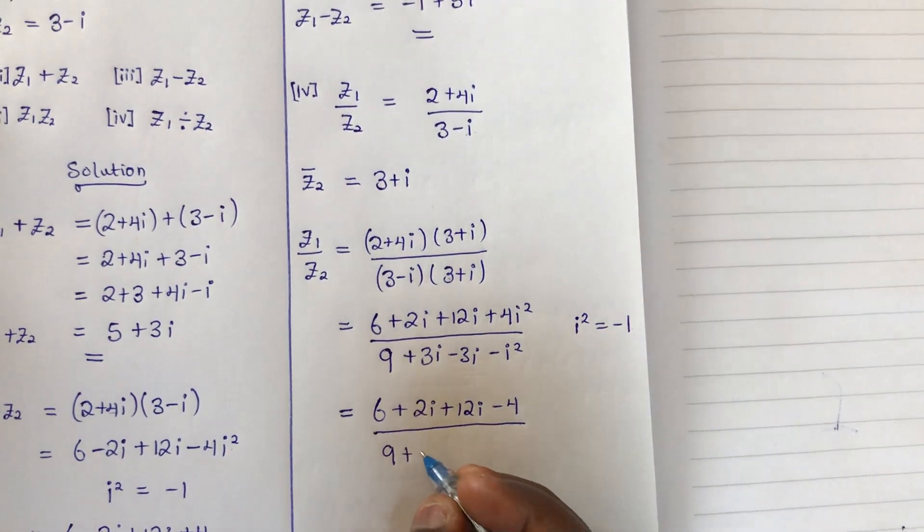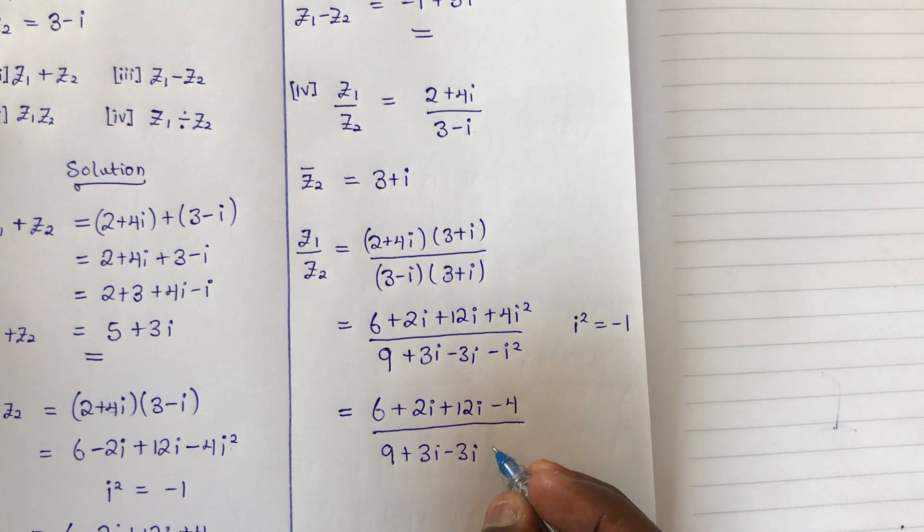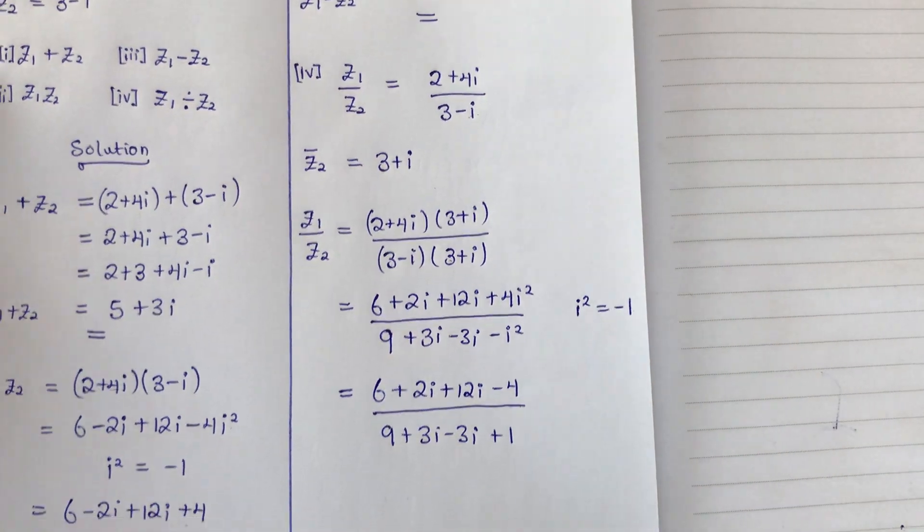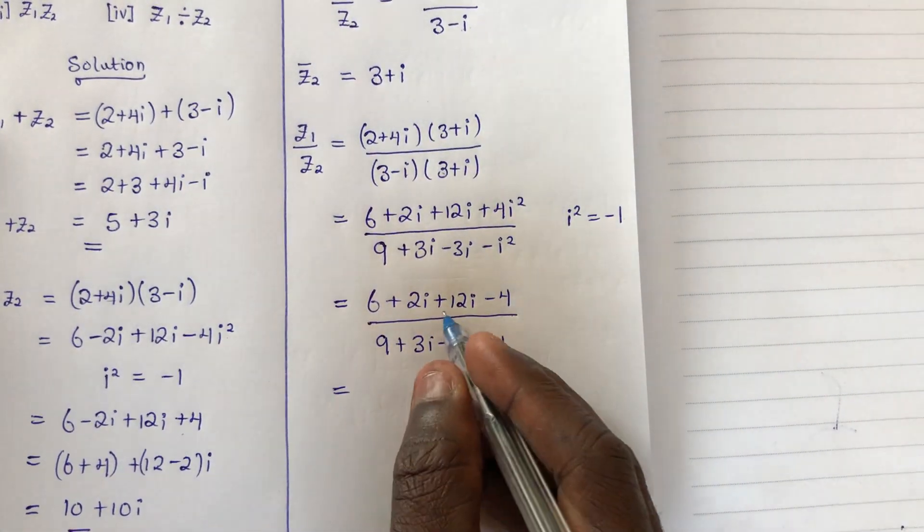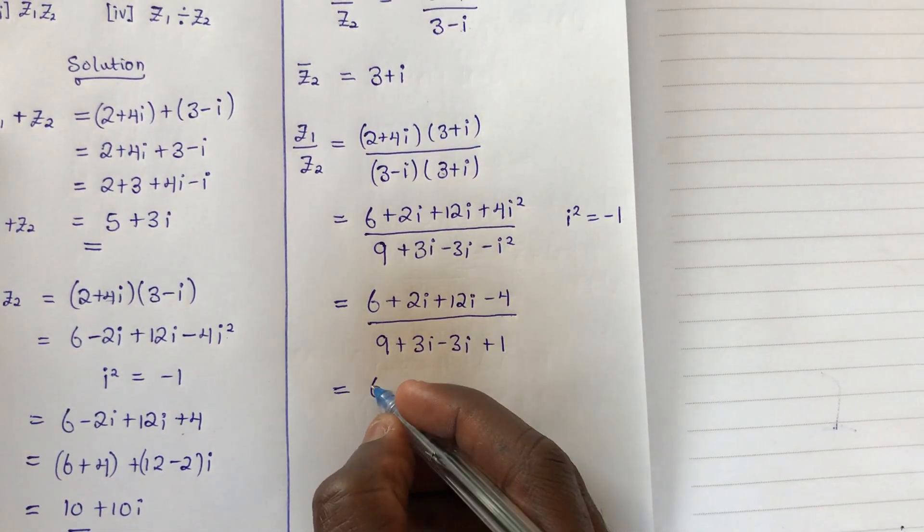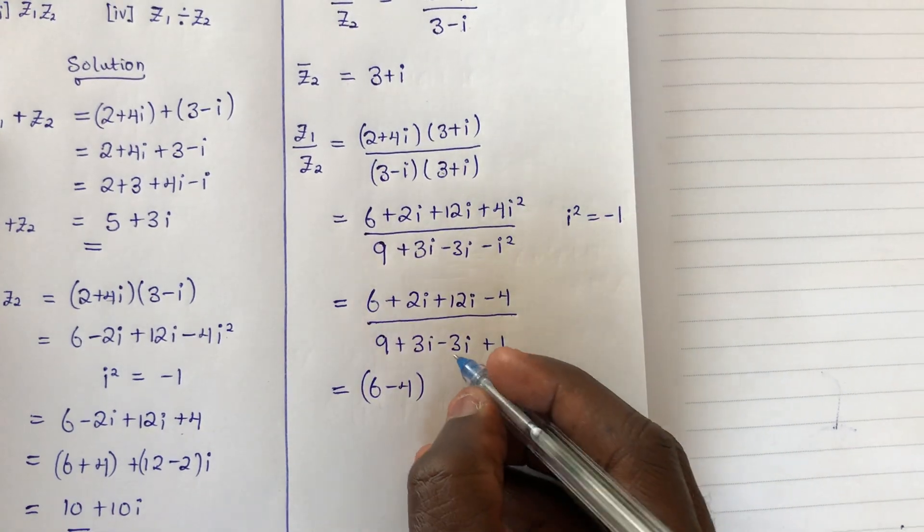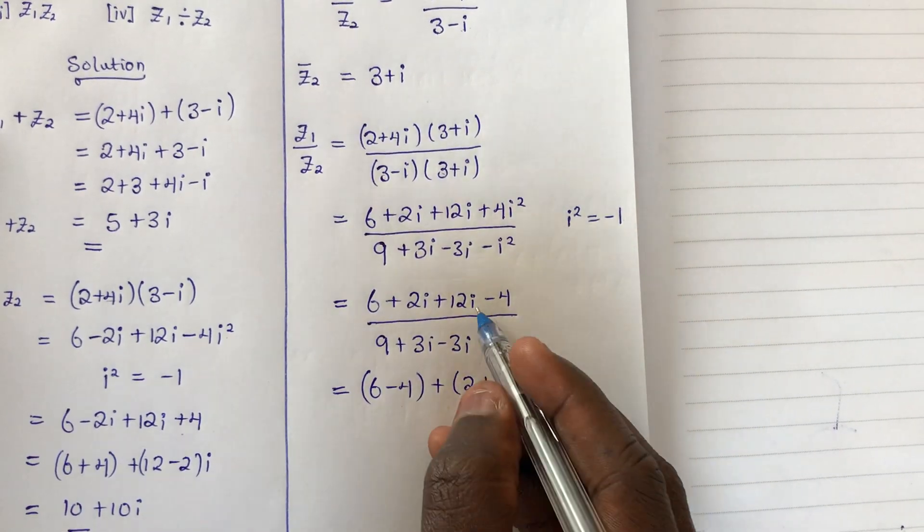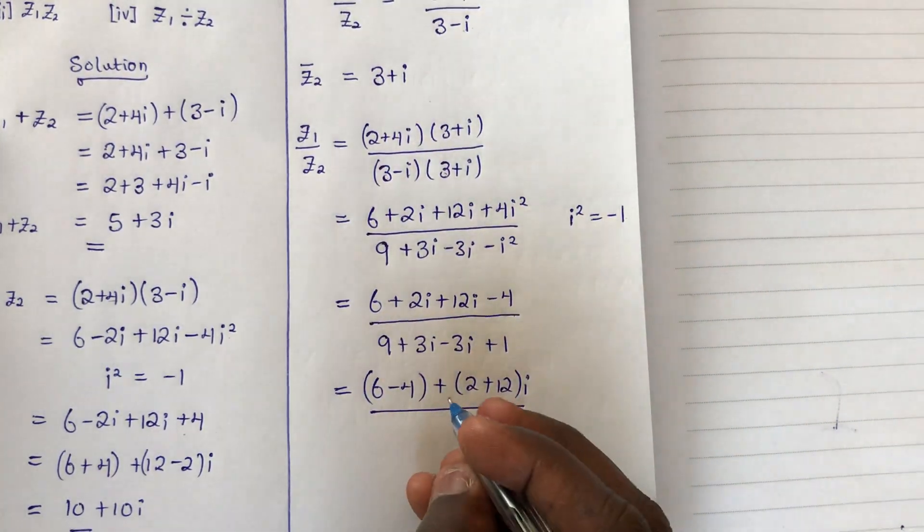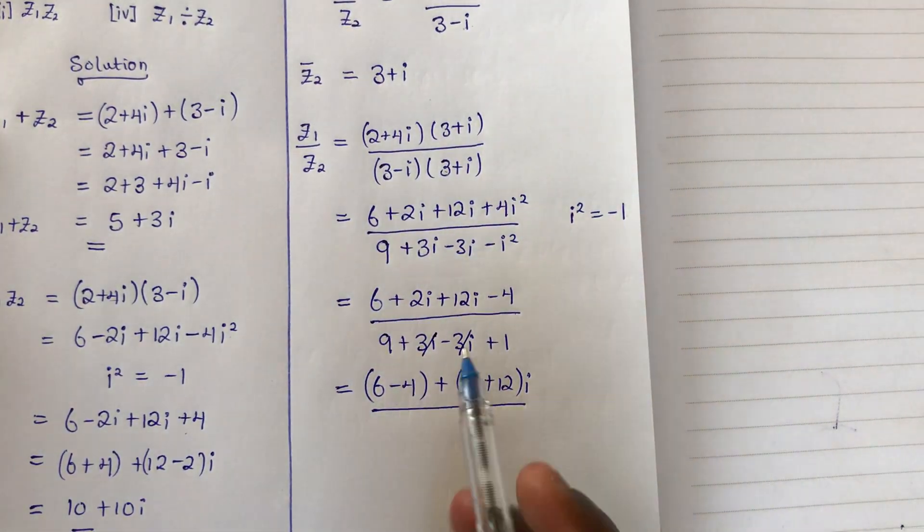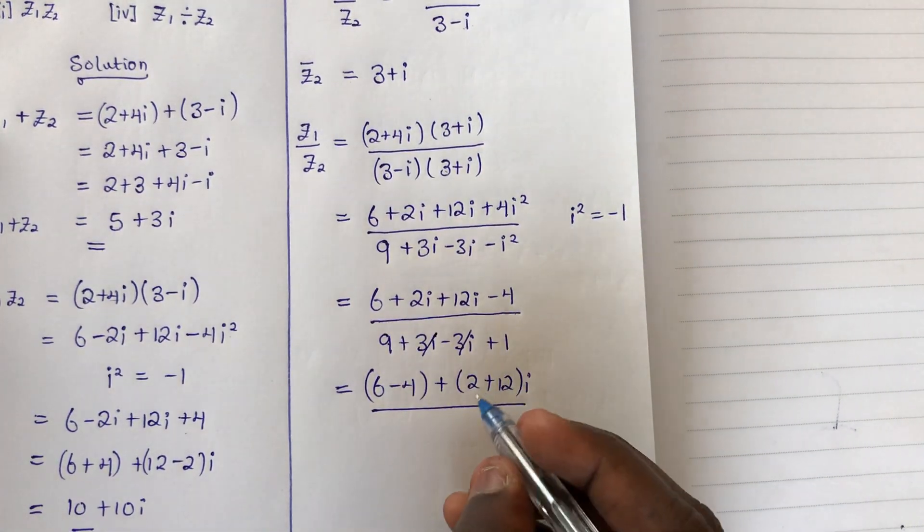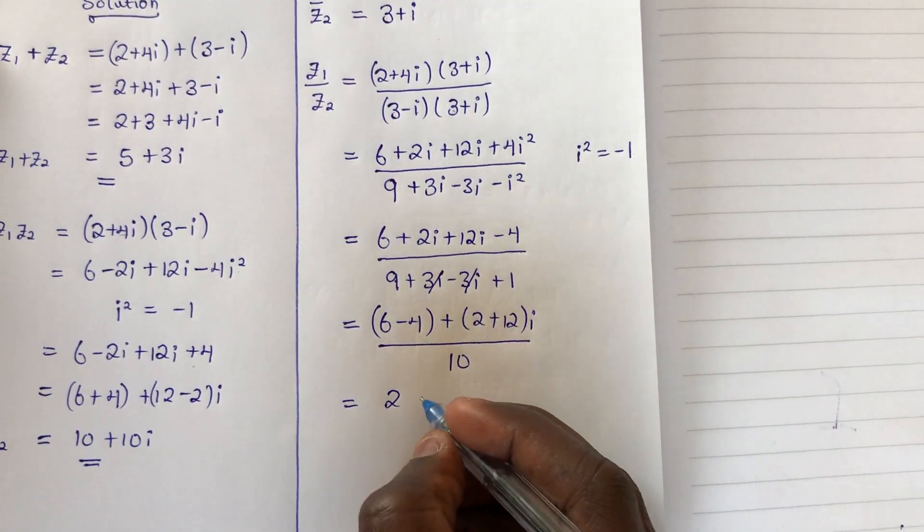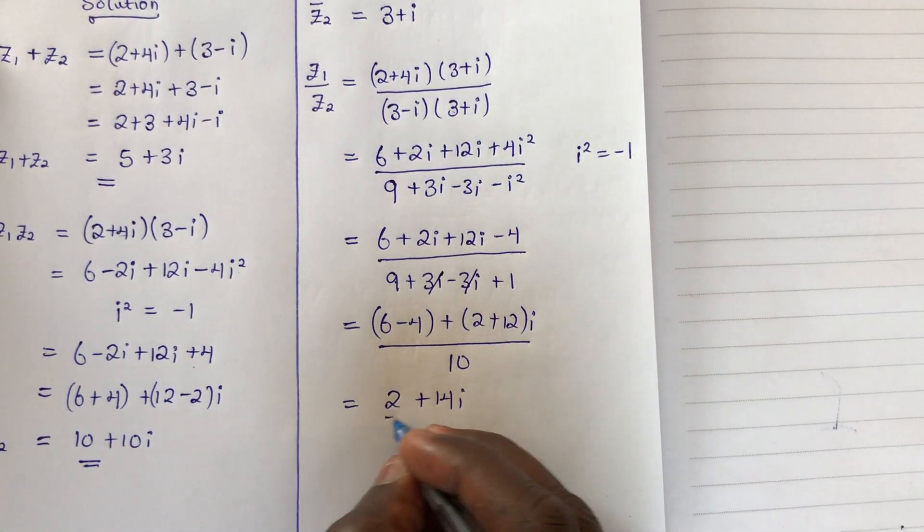We know i² = -1, so substitute: numerator becomes 6 + 2i + 12i - 4, and denominator becomes 9 + 3i - 3i + 1. Simplifying: numerator = (6 - 4) + (2i + 12i) = 2 + 14i, and denominator = 9 + 1 = 10 (the 3i terms cancel).